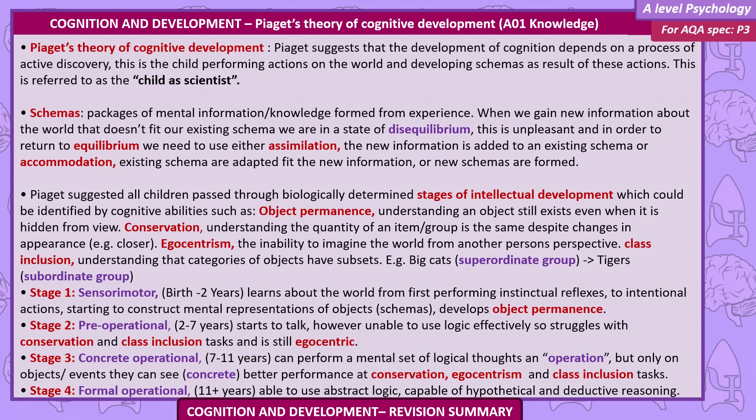Piaget suggested all children pass through biologically determined stages of intellectual development, which could be identified by cognitive abilities such as object permanence — understanding that an object still exists even when it's hidden from view.